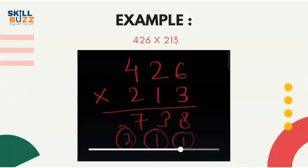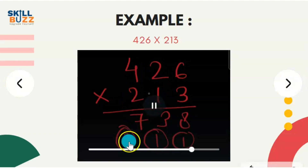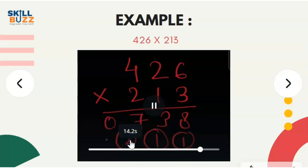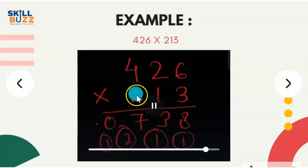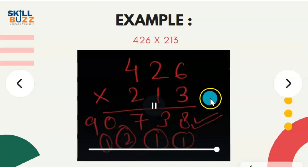Now, fourth step will be 4 into 1 and 2 into 2, that is 4 plus 4 equals 8. Eight plus 2 is 10. Zero we will write, one carry forward.